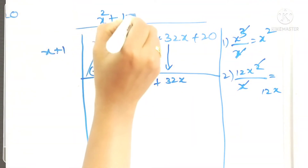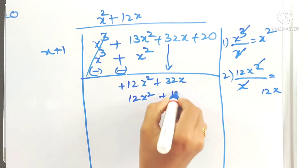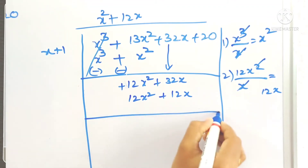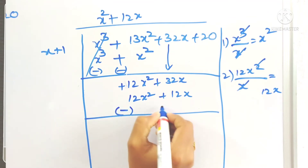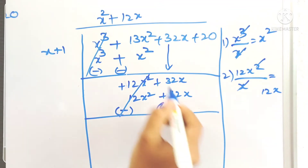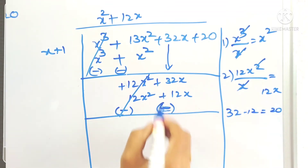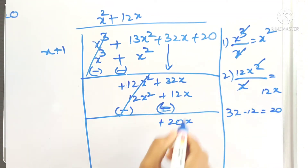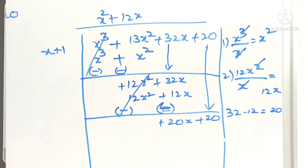Write 12x in the quotient. Multiply 12x by (x + 1) to get 12x² + 12x. Subtract by changing signs: 12x² cancels, and 32x − 12x = 20x. Bring down the next term, +20, to get 20x + 20.